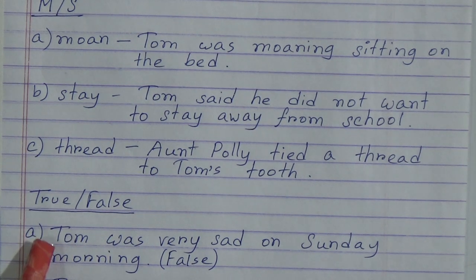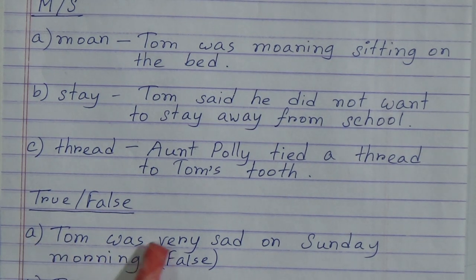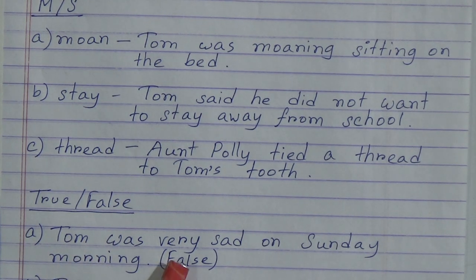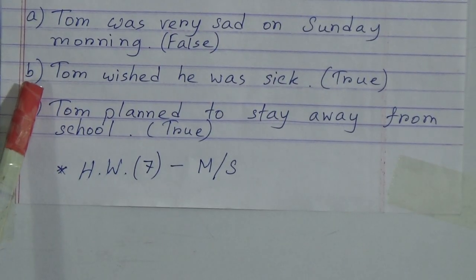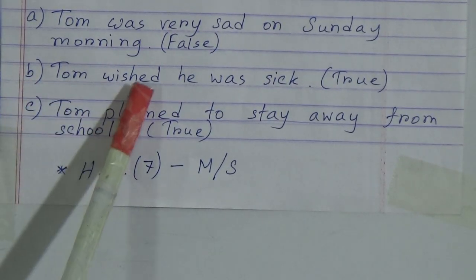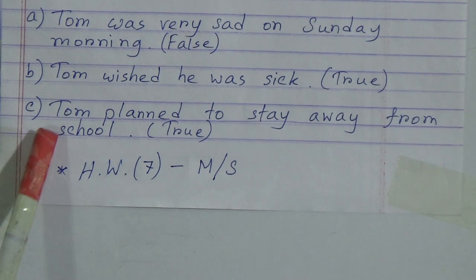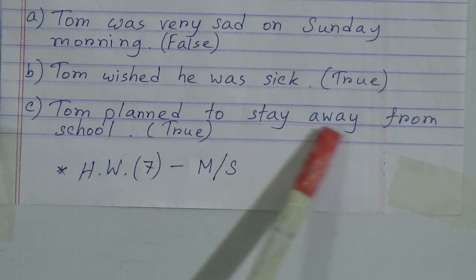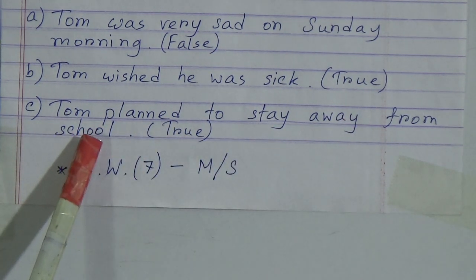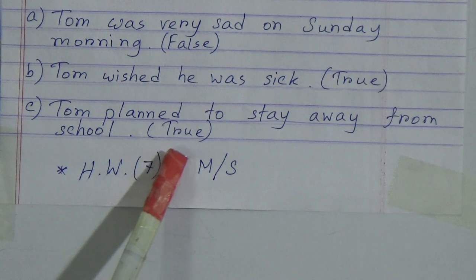Next we have true or false. Number A: 'Tom was very sad on Sunday morning' — this is false. Tom was sad on Monday morning, not Sunday morning. Number B: 'Tom wished he was sick' — this is true. Number C: 'Tom planned to stay away from school' — this is also true.